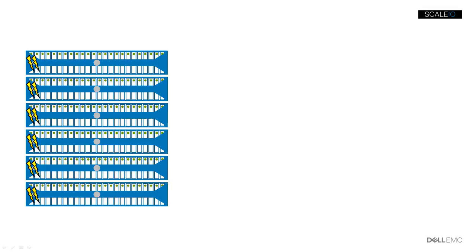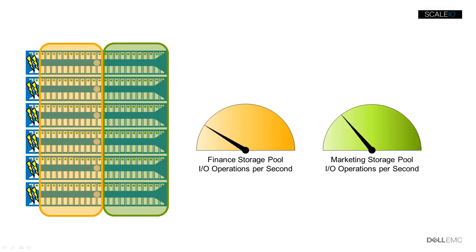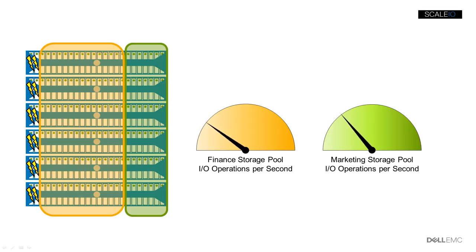Storage pools allow an administrator to dynamically move physical drives as business requirements change or when bursting capability is needed. In this six-node cluster with two spinning-media storage pools — one dedicated to finance and one to marketing — finance needs to burst storage performance for end-of-quarter processing. Some of the physical media that makes up the marketing storage pool can be moved to the finance storage pool to increase its performance.